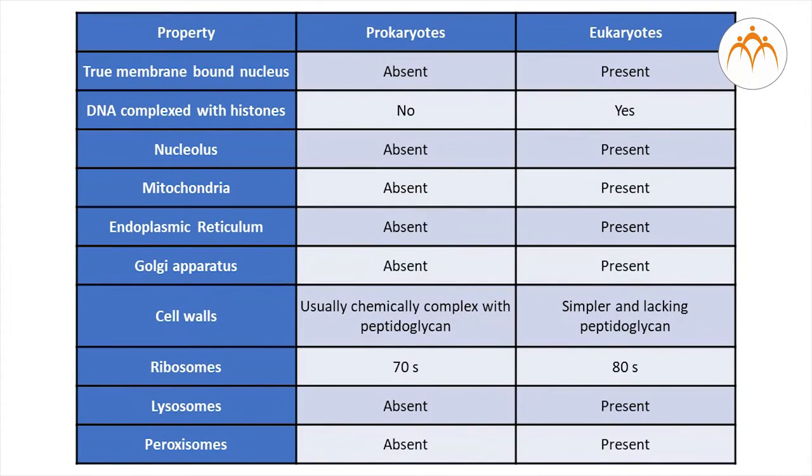True membrane-bound nucleus is absent in prokaryotic cells but present in eukaryotic cells. DNA complexed with histones is not in prokaryotes but it is there in eukaryotes. Nucleolus is absent in prokaryotes, present in eukaryotes.